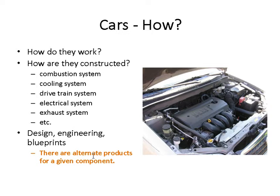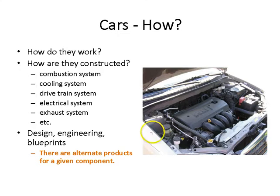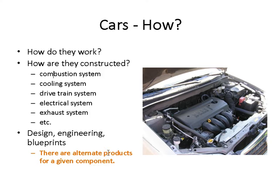And then, how? How do they work? How are they constructed? Some examples of the internals of a car are the combustion system, the cooling system, the drivetrain system, the electrical system, and the exhaust system, to name some of the major systems. This involves design, engineering, and blueprints. There are alternate products for a given component — different manufacturers build different engines, but the engines serve the same purpose. There are different exhaust systems, different tires from different companies. This is the concept of alternate implementations for a given component.